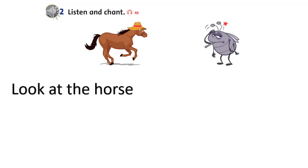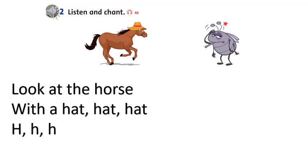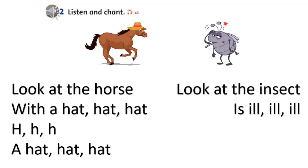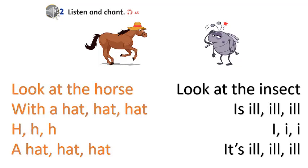Look at the horse with an insect and a hat, an insect. It's ill, ill, ill. I, ill, I, I. It's ill, ill, ill. Look at the horse with a hat, hat, hat. H, H, H. A hat, hat, hat. Look at the insect, it's ill, ill, ill. It's ill, ill, ill.